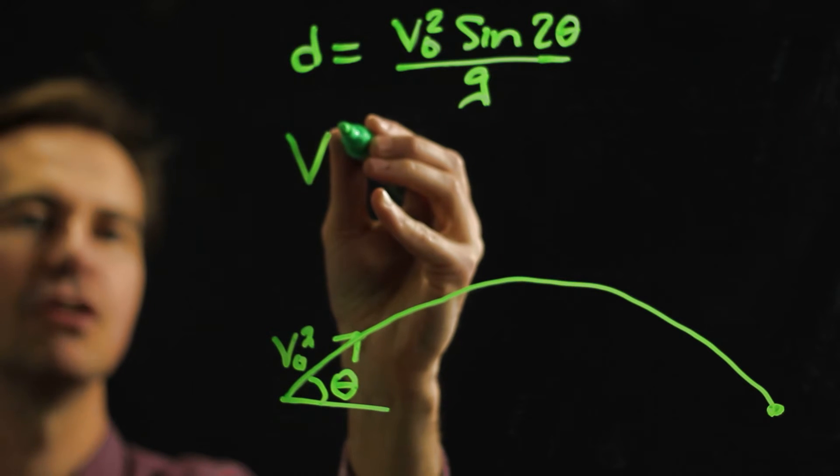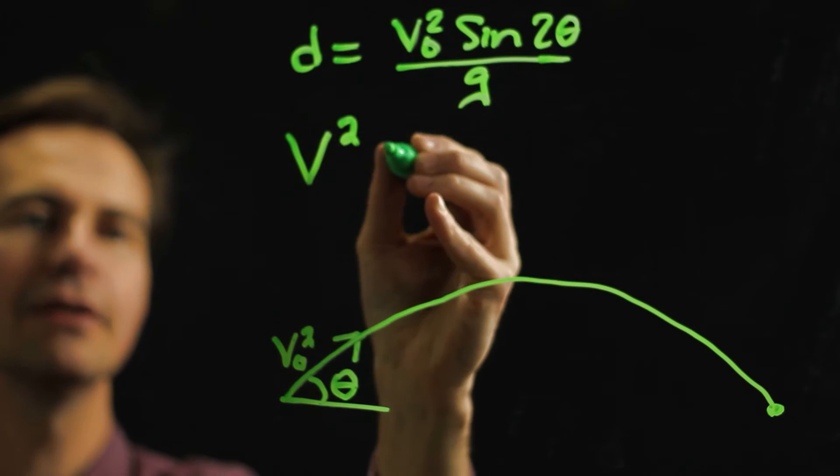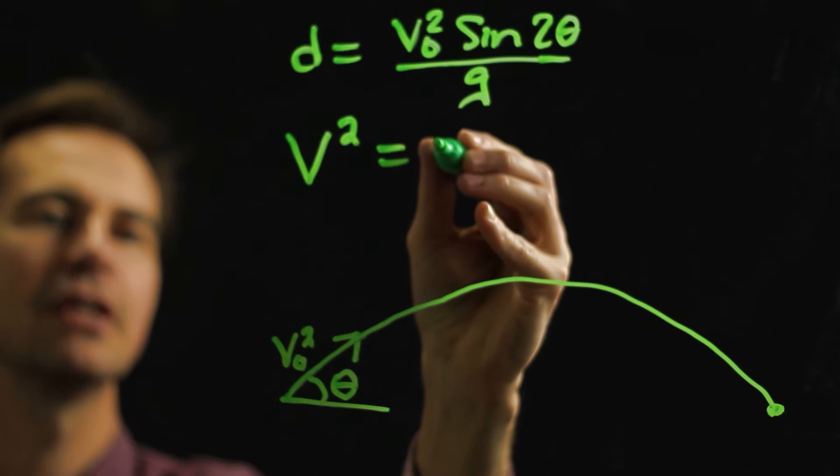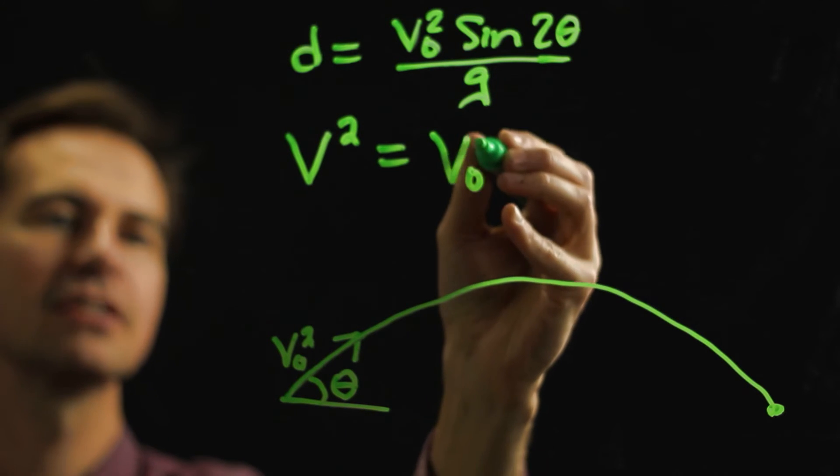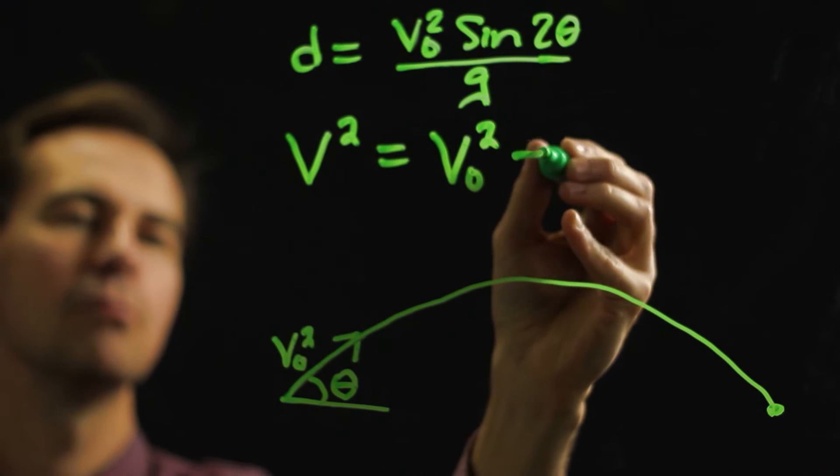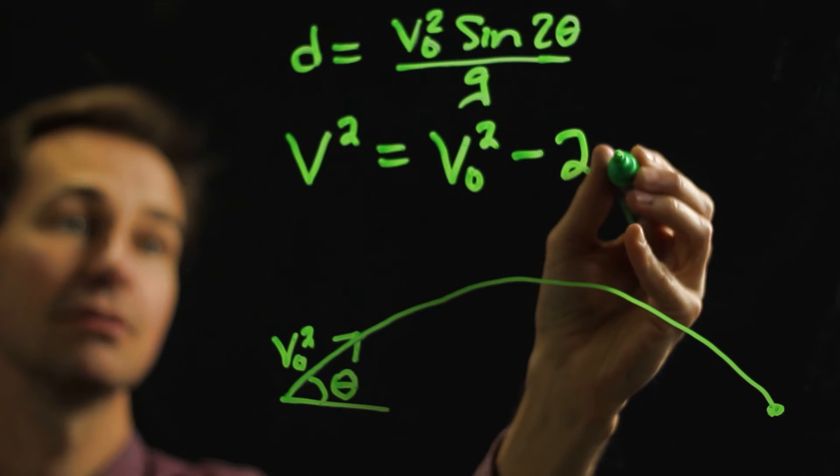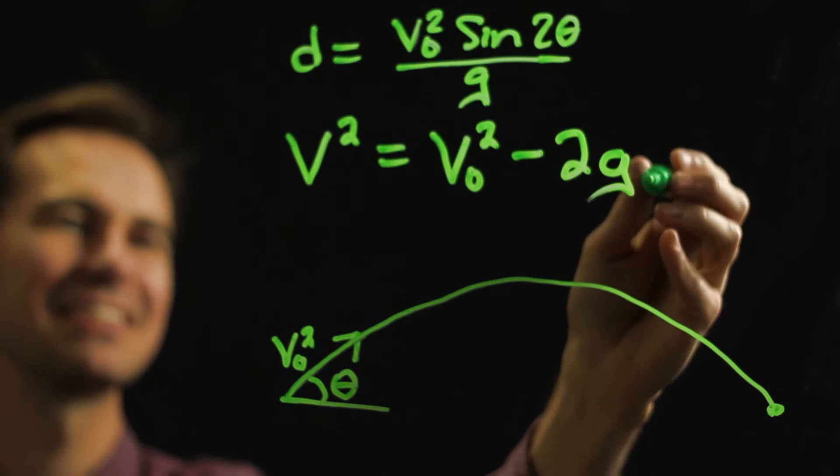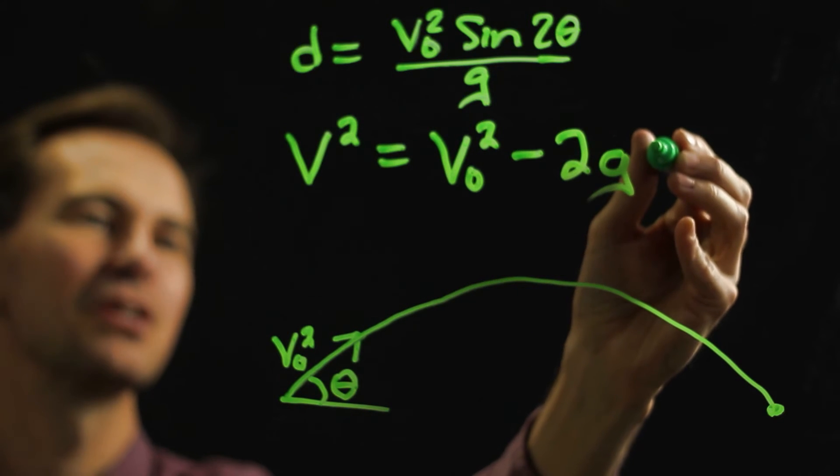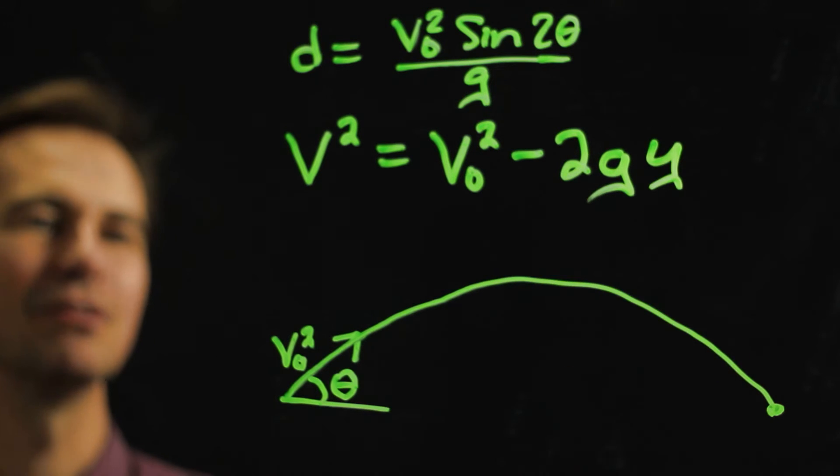If you know the velocity at the end, it's related to the velocity at the beginning minus 2 times g, if we're dealing with acceleration, times the distance traveled in that direction.